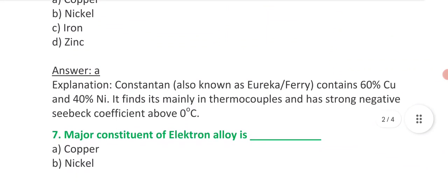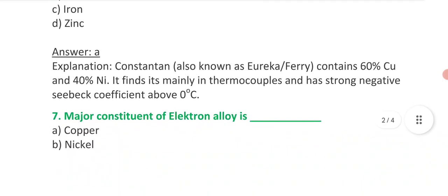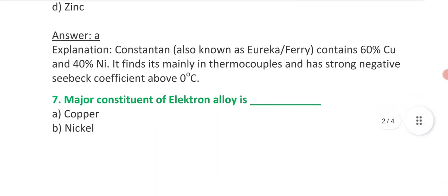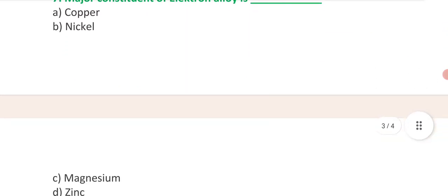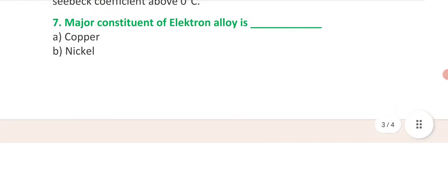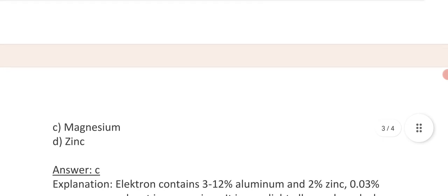Question 7. Major constituent of electron alloy is - option A copper, option B nickel, option C zinc. And answer is C.